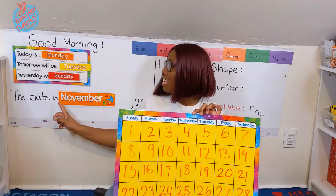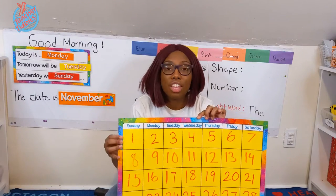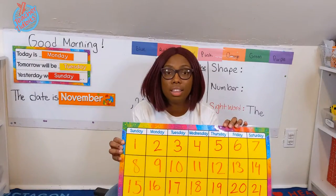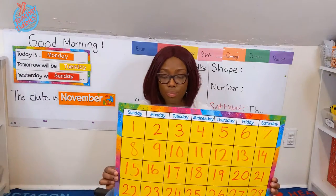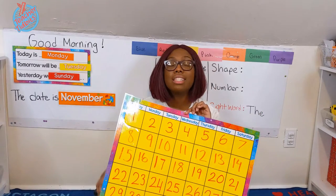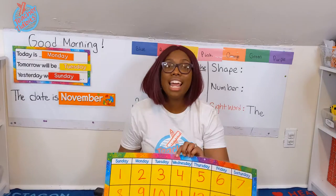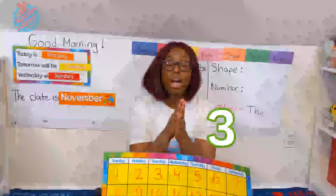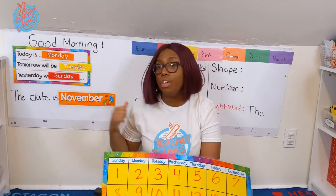The date is November — that's the month that we're in, and it's the last day of the month. Now let's figure out the date using our calendar. The month is November. That's a big word. Can you say that with me? Let's clap it out. November — three claps equal three syllables.